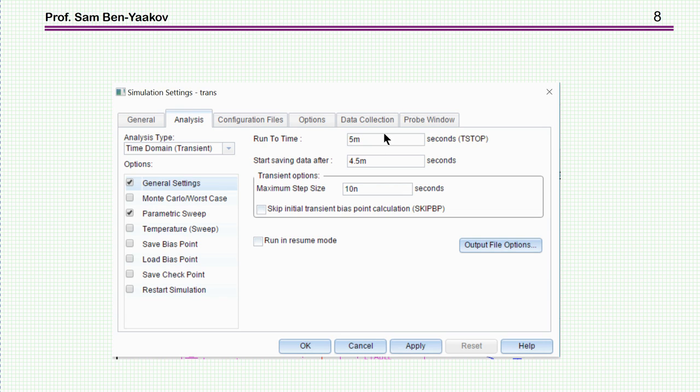I'm setting the running time to 5 milliseconds, collecting data after 4.5 milliseconds. Very important to limit the maximum step size. This is very, very important. Otherwise, you might have a convergence problem. Actually, it'll be better to have it 1 nanosecond, but it'll take, of course, 10 times longer to run. This is the basic setting.